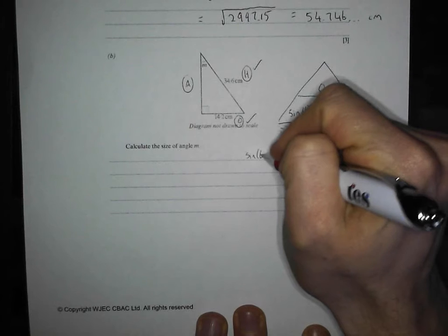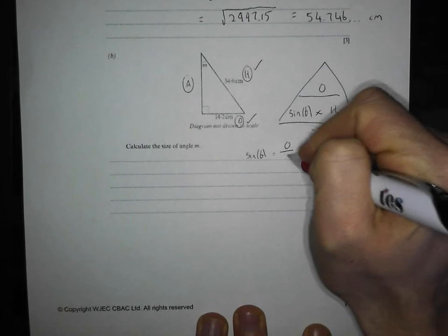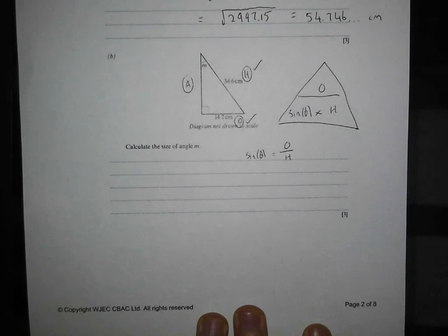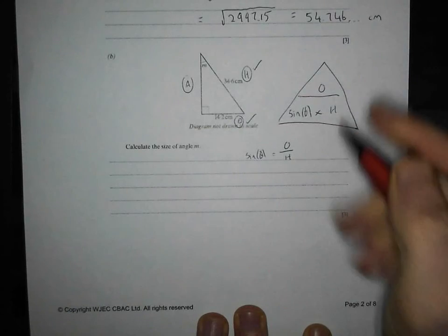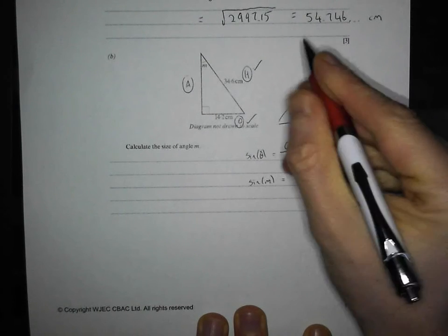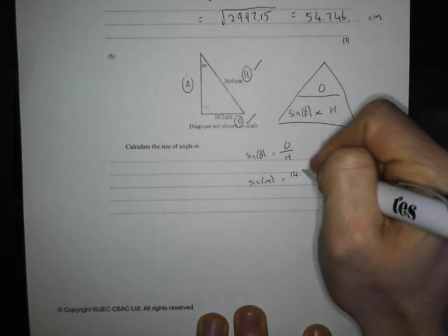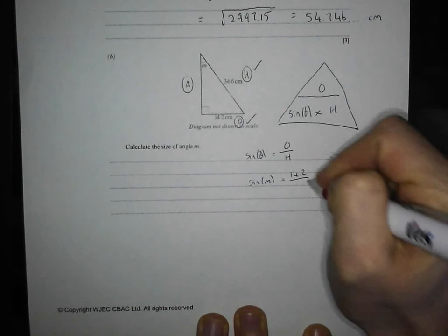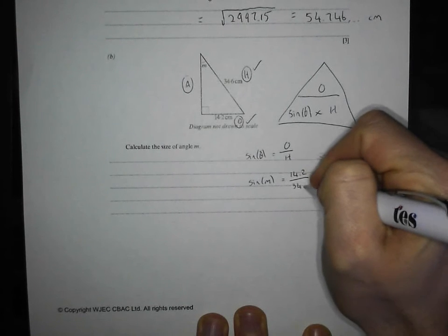Sin theta equals opposite divided by hypotenuse. Now theta just stands for the angle. In this case it's M. So sin M equals opposite, which is 14.2, divided by hypotenuse, which is 34.6.